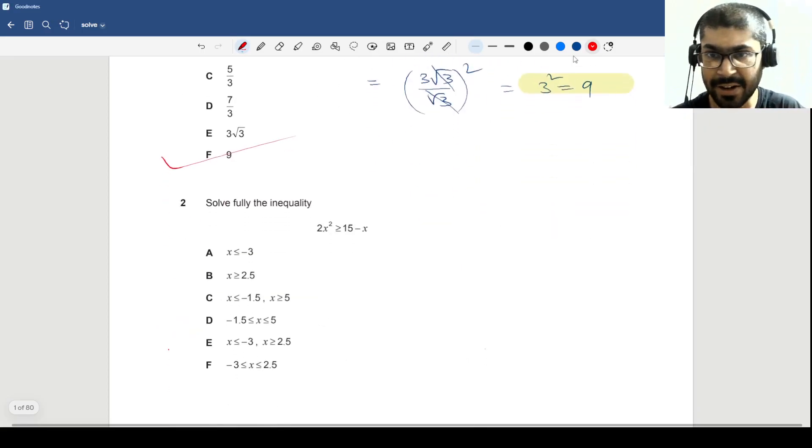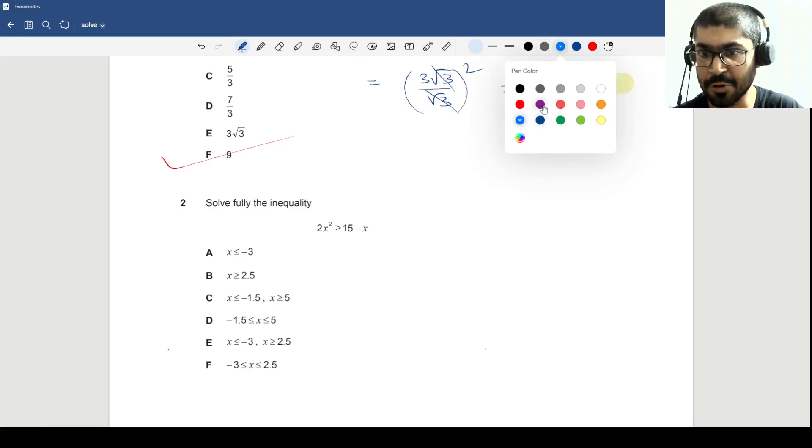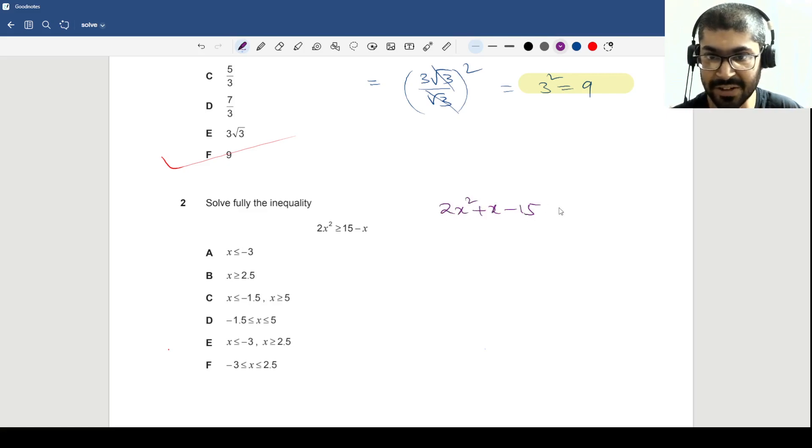Next question. Question 2. Solve the inequality. So I will show you the inequality, how to solve it in a traditional sense. Then of course we will apply some shortcuts. So this becomes 2x² + x - 15, if I shift everything to the left hand side, greater than or equal to 0. So 2, 15, 30. 30 gets broken down into 6 and 5. So 2x² + 6x - 5x - 15 is greater than or equal to 0.